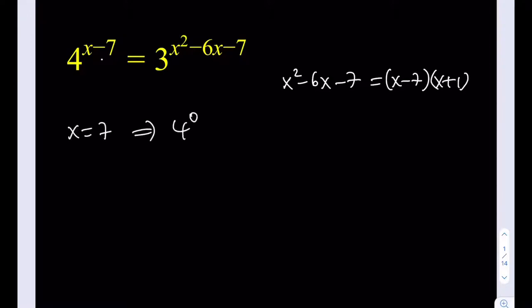So we'll get the equation 4 to the power 0 equals 3 to the power 0, which is equal to 1. So that's true. So x equals 7 is one of the solutions. Are there any other solutions? We're going to find out.